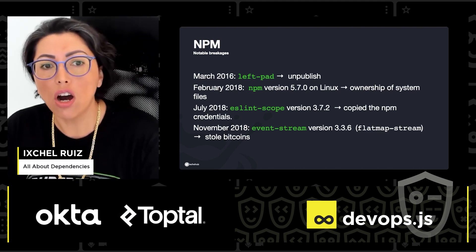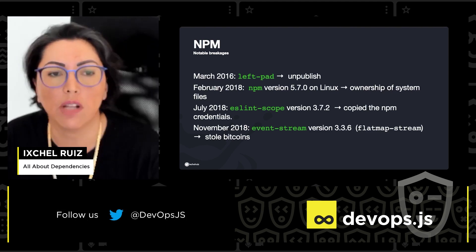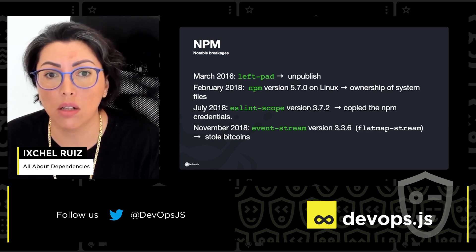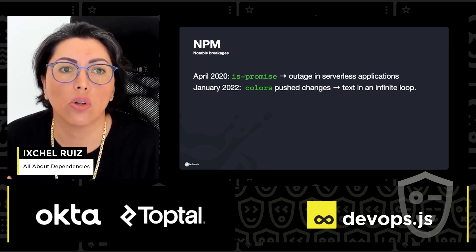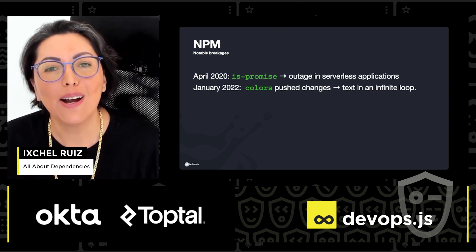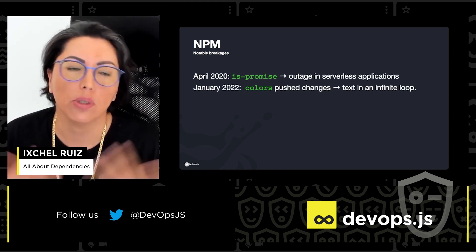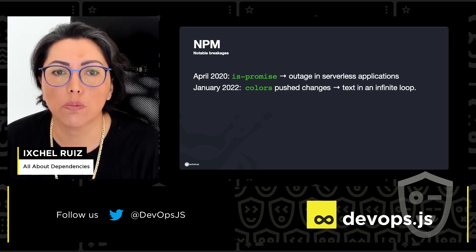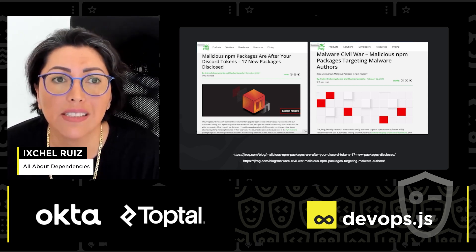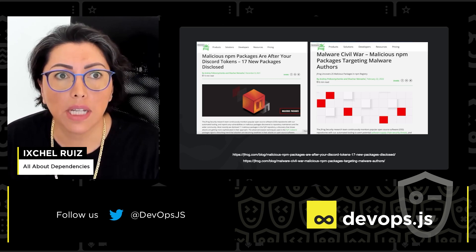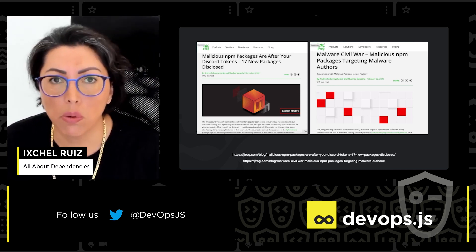In November 2018, it was discovered that a malicious package had been added as a dependency to version 3.3.6 of event-stream — this was flat-map-stream — containing encrypted payloads that stole Bitcoins from certain applications. In April 2020, a small package called Spromise caused many serverless applications to go down. In January 2022, the maintainer of the colors package pushed changes printing garbage text in an infinite loop, and that was a problem. More recently, companies like mine — JFrog — are constantly detecting and publishing information about malicious NPM packages that have appeared.